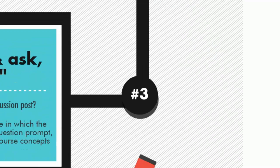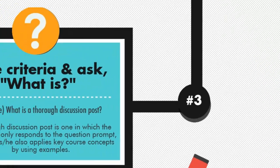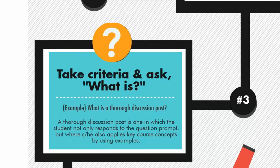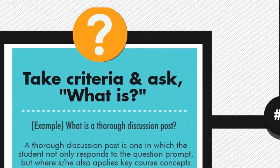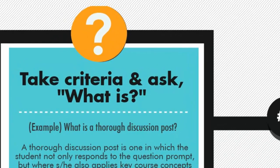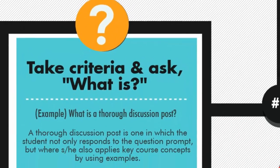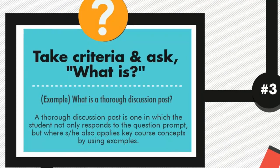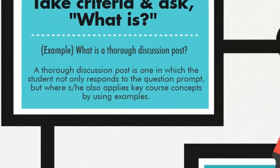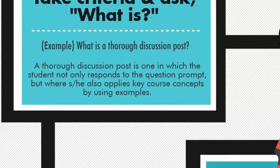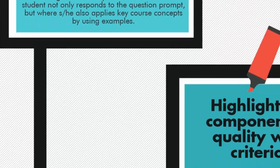Step 3: Take each criterion and ask, "What is it?" For example, what is a thorough discussion post? A thorough discussion post is one in which the student not only responds to the question prompt, but where she or he also applies key course concepts by using examples.